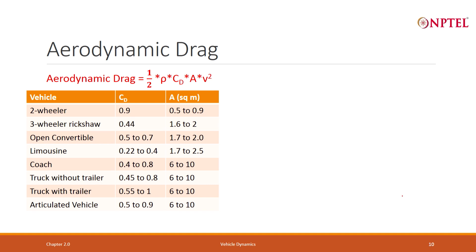Let us start first with aerodynamic drag. As we have studied, aerodynamic drag is half times rho — rho is the air density — times cd, the drag coefficient, times the projected area A, times velocity squared. What is a typical value of cd and area for different devices? The projected area: a two-wheeler has a very small projected area, a three-wheeler has a larger one, a car is still larger, and a coach or truck with a trailer goes bigger and bigger. That is the amount of air it cuts, and therefore that much force must be applied.